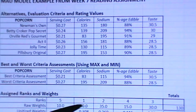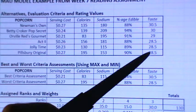So these are my new weights: 7% for cost, 30% for calories, 26% for sodium, 11% for percentage edible, and 23% for taste, adding up to 100% of my total weights.